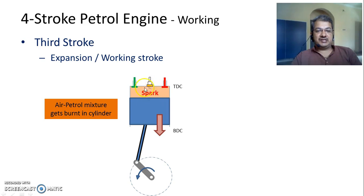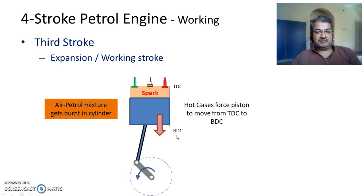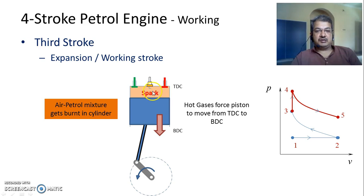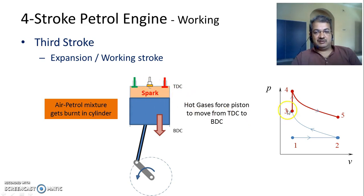The hot gases generated inside the cylinder force the piston to move from Top Dead Centre to Bottom Dead Centre. This process is represented by two lines on the PV diagram: 3 to 4 indicates a sudden increase in pressure due to ignition of the fuel, and then the hot gases at very high pressure at point 4 force the piston to move downward, making the volume increase and the pressure gradually decrease — represented by the curve 4 to 5.